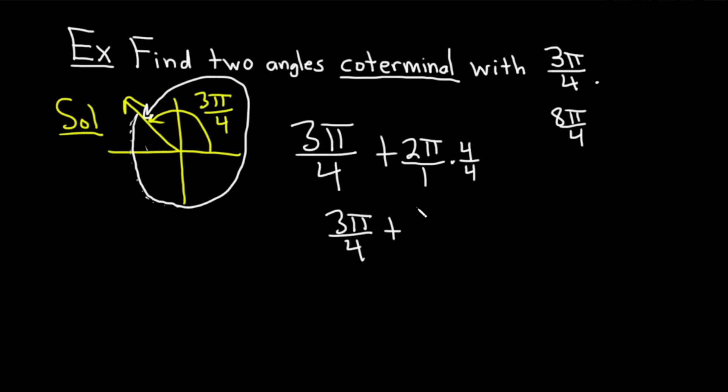That's 3 pi over 4. Plus, and then 4 times 2 pi is 8 pi. And then 4 times 1 is 4. And now you have a common denominator. So, you can add these. So, 3 pi plus 8 pi is 11 pi over 4. So, that's going to be our first angle, our first answer that's coterminal with 3 pi over 4.